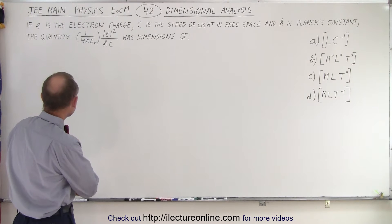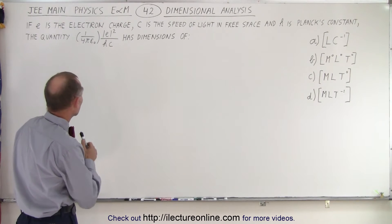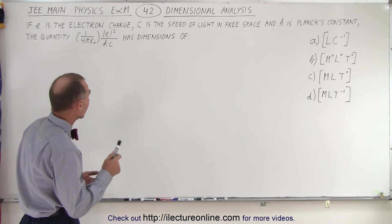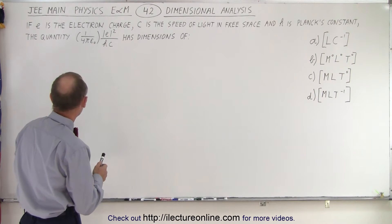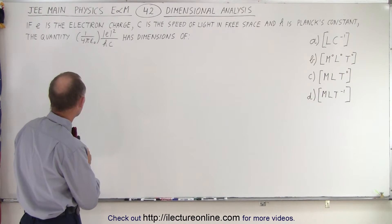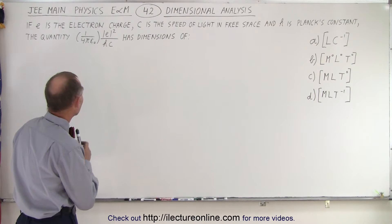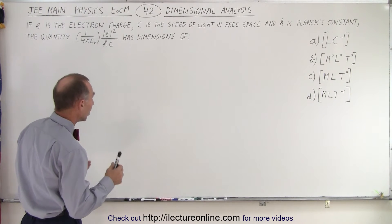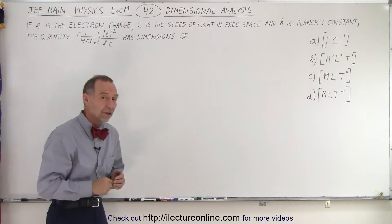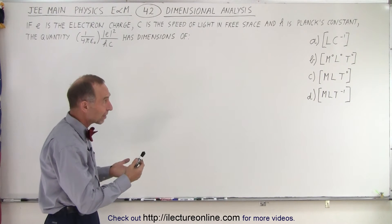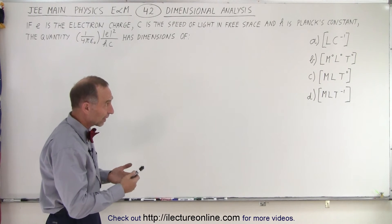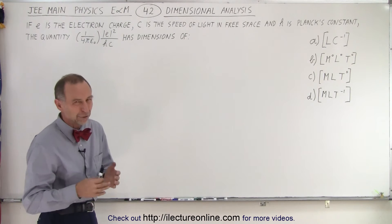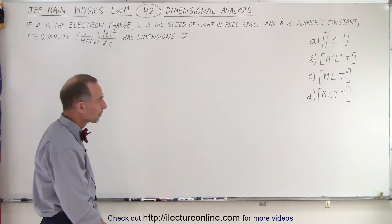It says that if E is the electron charge, C is the speed of light in free space, and H is Planck's constant, the quantity 1 over 4π epsilon sub-naught times E squared over HC has dimensions of — and we have four possible answers. M stands for mass, L stands for length, T stands for time, and C stands for charge, Coulombs or charge.